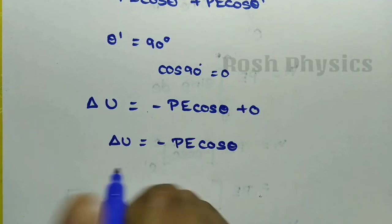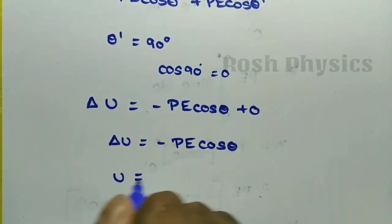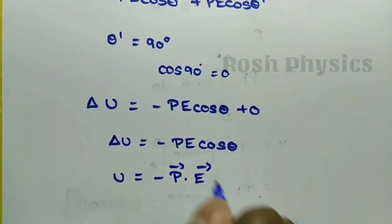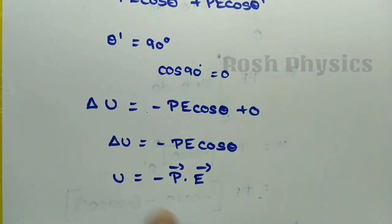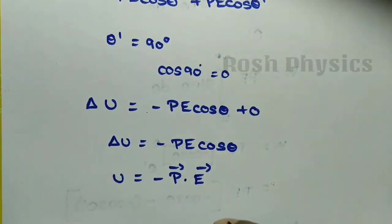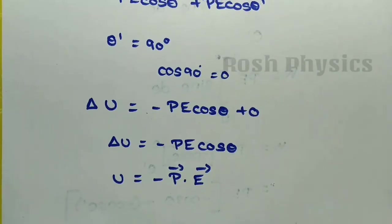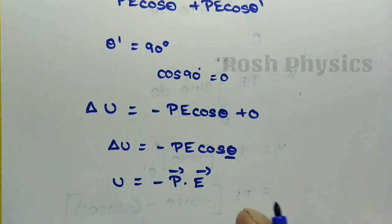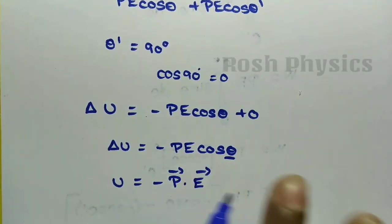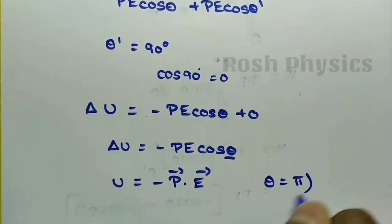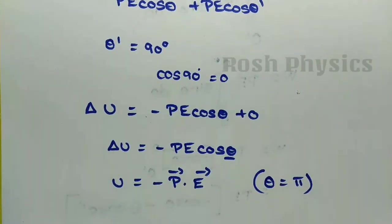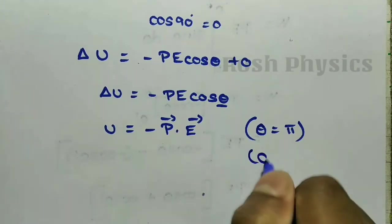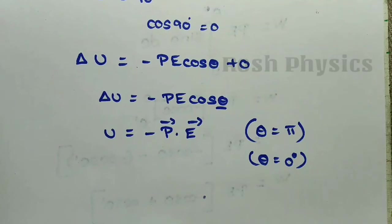In vector form, the potential energy is written as U = −p⃗·E⃗, because the dot product in vector form replaces cosθ. The potential energy depends on the angle θ of the dipole with respect to the external electric field. It is maximum when the dipole is aligned anti-parallel to the field (θ = π), and minimum when aligned parallel to the field (θ = 0°).